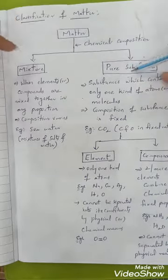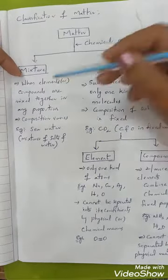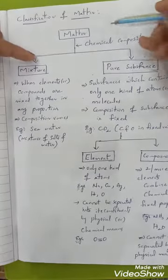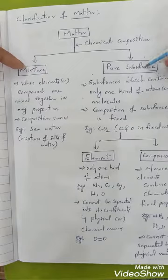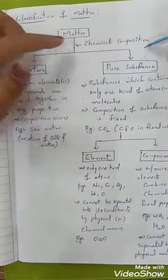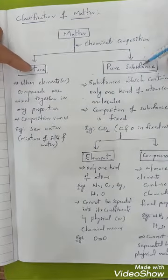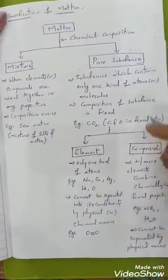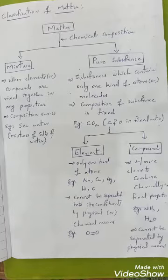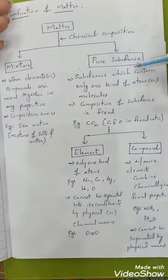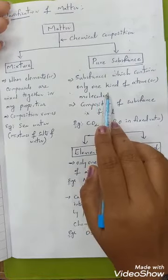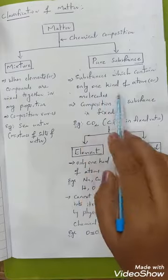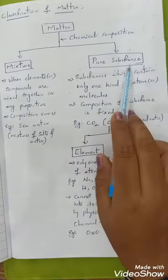Matter is mainly classified into two types: mixture and pure substance. This classification is based on chemical composition. First we will see what is a pure substance. Substances which contain only one kind of atom or molecule are known as pure substances.